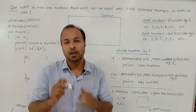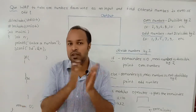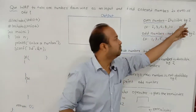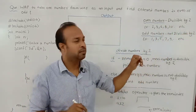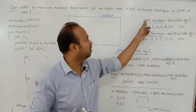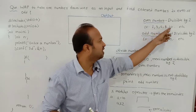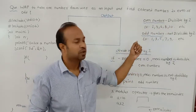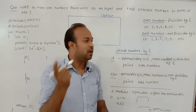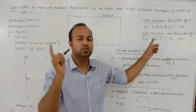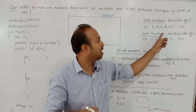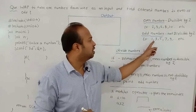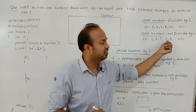What do we mean by even number and odd number? A number that is divisible by 2 is called an even number. Examples of even numbers are 2, 4, 6, 8, 10, etc. A number which is not divisible by 2 is called an odd number. Examples are 1, 3, 5, 7, etc.